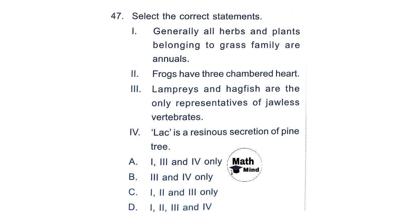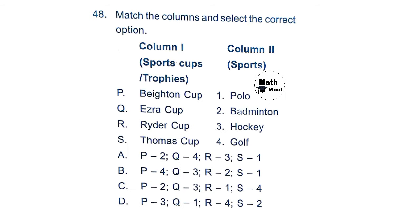Question 47: Select the correct statements. Statement 1: Generally all herbs and plants belonging to the grass family are annuals. Statement 2: Frogs have a three-chambered heart. Statement 3: Lampreys and hagfish are the only representatives of jawless vertebrates. Statement 4: Lac is the resinous secretion of a pine tree. Option C is correct: only statements 1, 2, and 3 are correct.